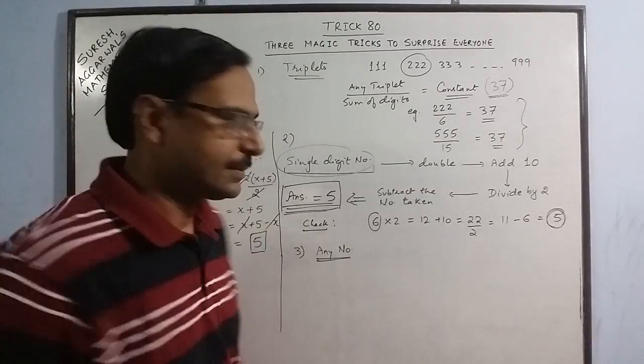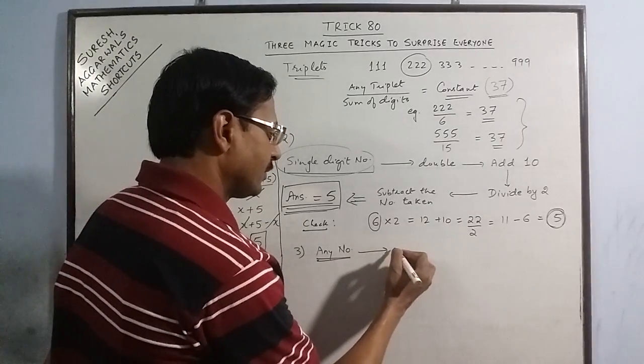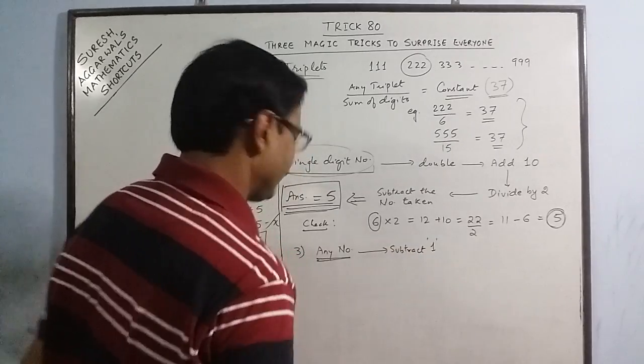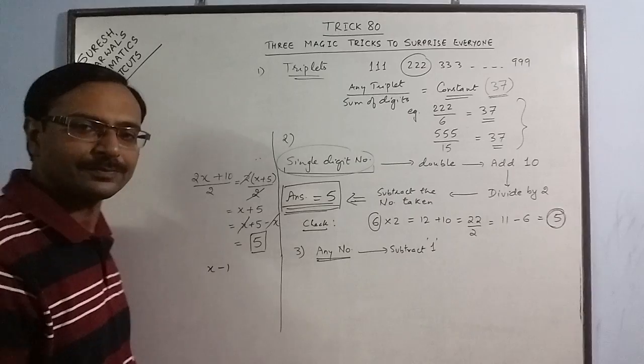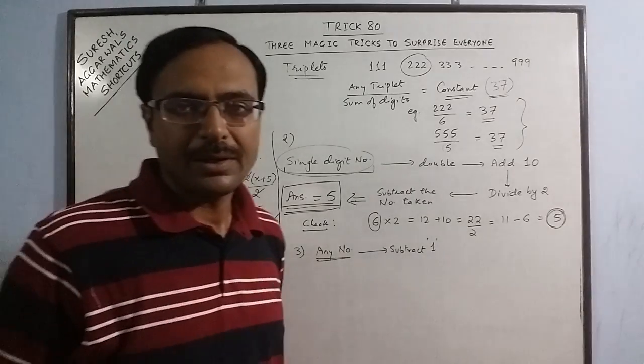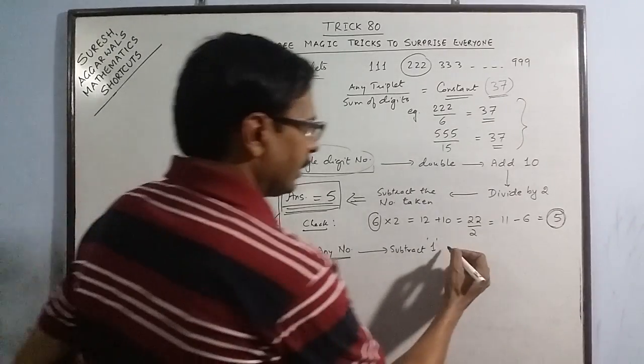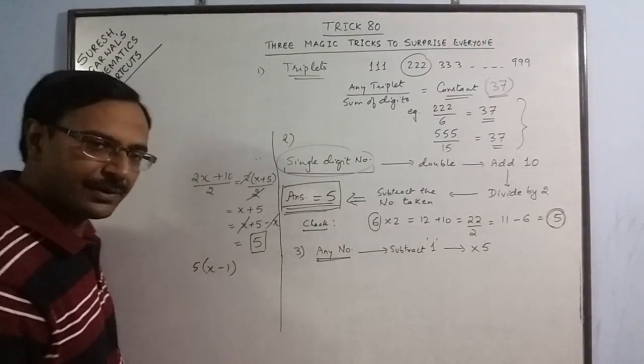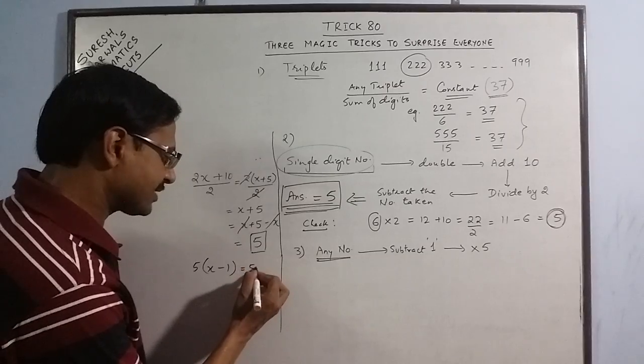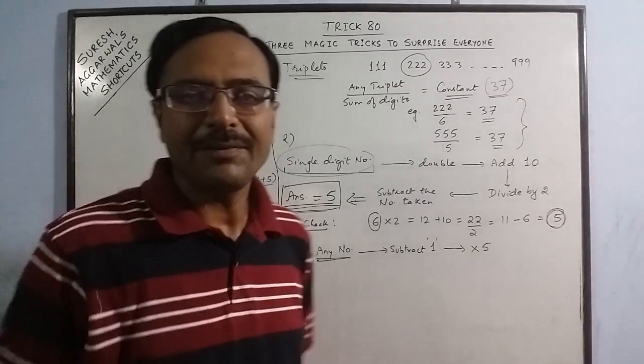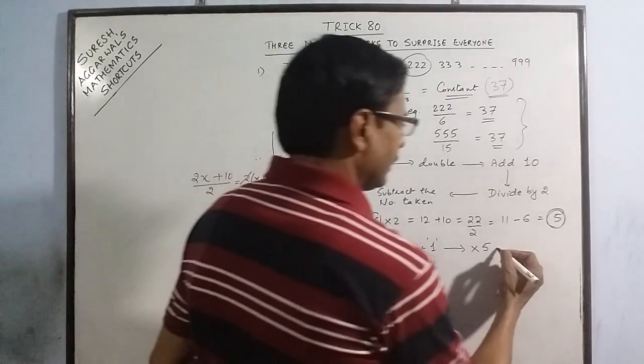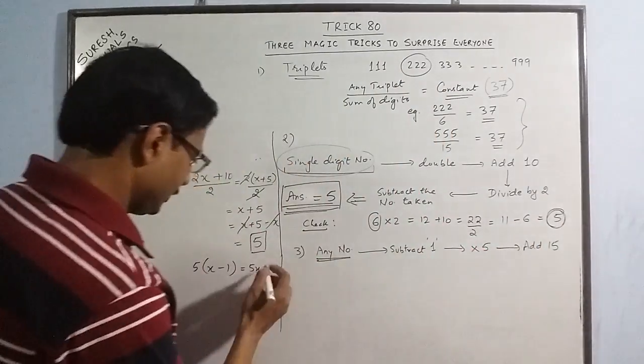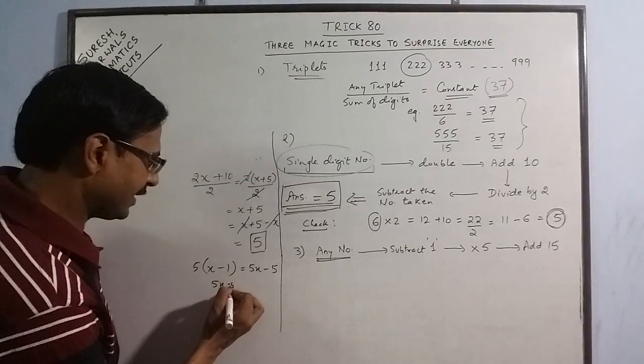We have taken any number as x. Now let us subtract 1 from the number, so x minus 1. Now after subtracting 1, multiply by 5. So you have this multiplied by 5, so now you get it as 5x minus 5. After this, add—say I am taking a multiple of 5 only—15. So 5x minus 5 plus 15 will give you 5x plus 10.